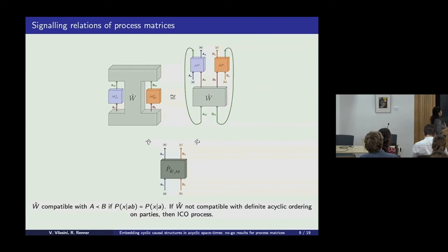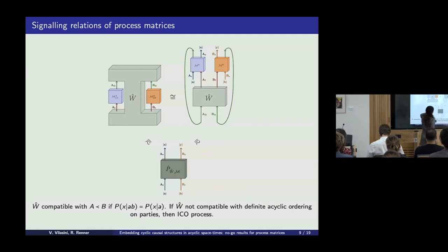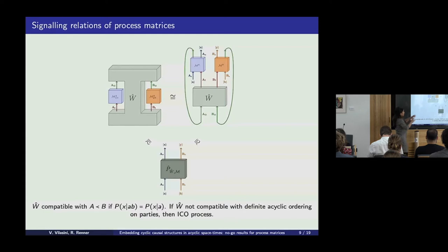In a process matrix — many of you might be familiar with this picture — we've got a process matrix which acts on two local operations, Alice and Bob. We can view this action of the process on the local operations through a sort of cyclic composition. We've made one thing explicit here: each party can freely choose which operation to perform. This is made explicit by having an additional classical wire, where depending on the value, Alice can apply a different map on her quantum output — one map capturing all possible choices using different classical inputs. This composition gives an object with classical input and output wires encoding the joint probability distribution of Alice and Bob.